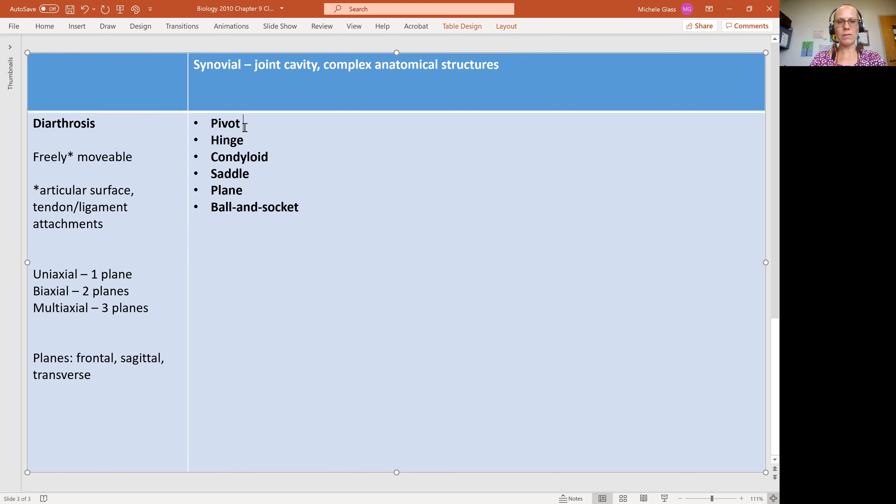So our pivot is our synovial joint, but it does have the least amount of movement. It's going to be classified as uniaxial. This is defined as a bone that rotates within a ring formed from bone and ligament.